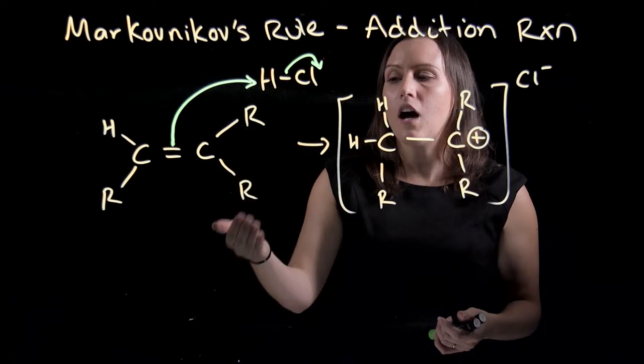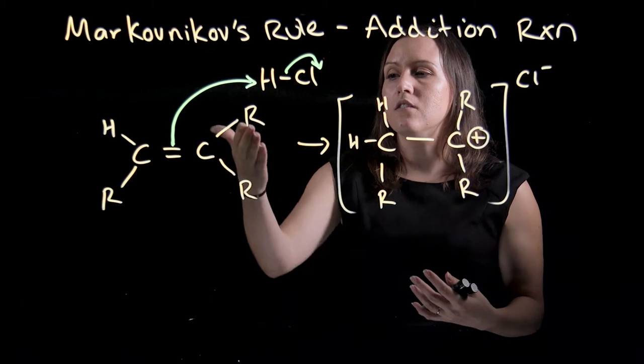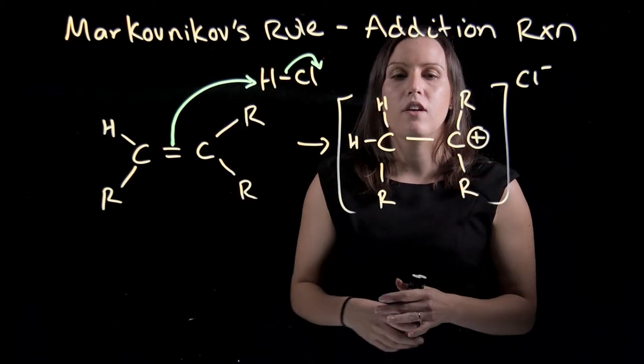On this side here, I have two carbon groups, or two R groups. So this is a secondary carbocation that has been produced in this reaction.